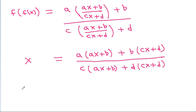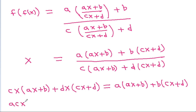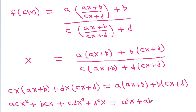If we cross multiply, then we get cx times (ax + b) + dx times (cx + d) = a times (ax + b) + b times (cx + d). Expanding: acx² + bcx + cdx + d²x = a²x + ab + bcx + bd.